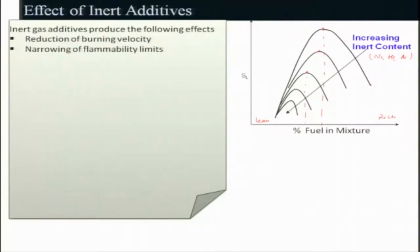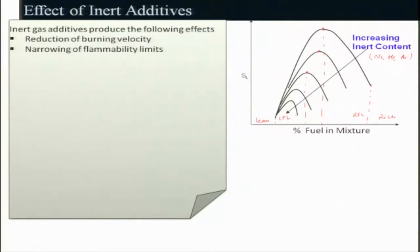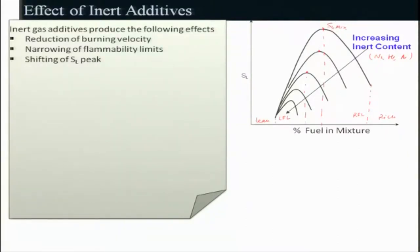Another important thing we will be discussing later is the flammability limit. This is known as the rich flammability limit (RFL) and this is the lean flammability limit. The flammability limit is being narrowed down — within this range the flame has a certain finite burning velocity, meaning it is flammable, but beyond this it is not. And as mentioned, there is a shifting of the peak S_L maximum towards the lean side.